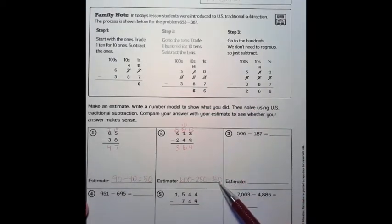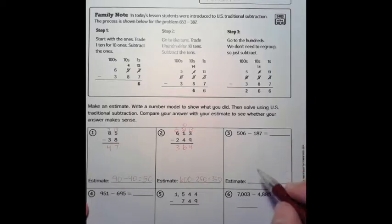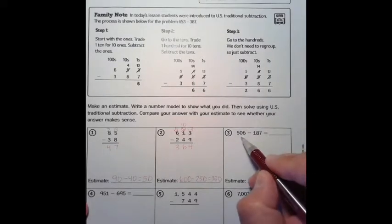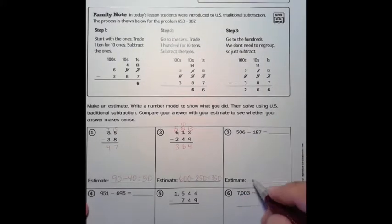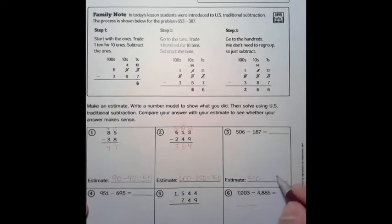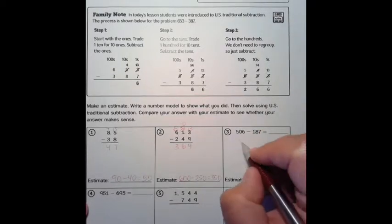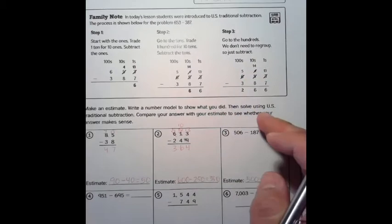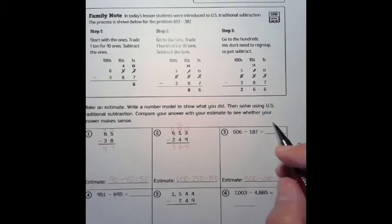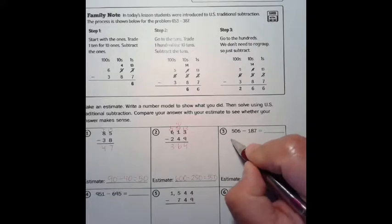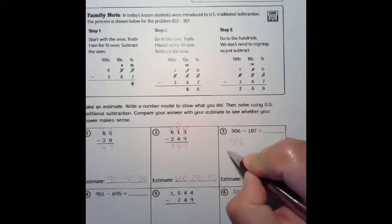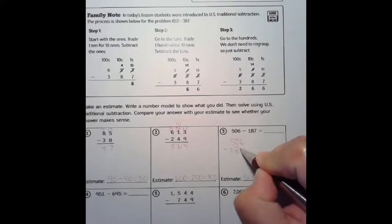506 take away 187. We're going to go 500 take away 200, that would be 300 as our estimate. Now this is written horizontally and I like to subtract using vertical numbers, so we're going to go 506 take away 187 and make it vertical.